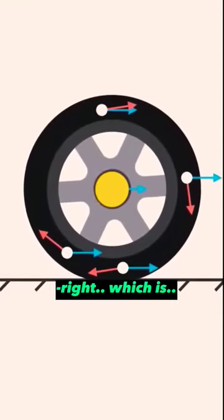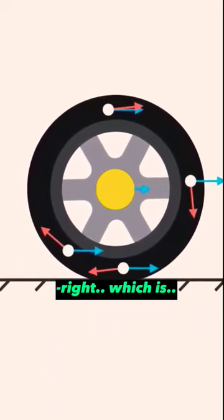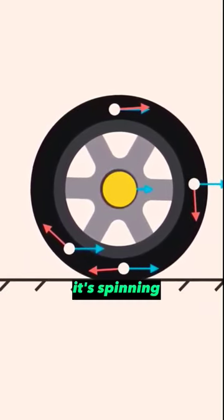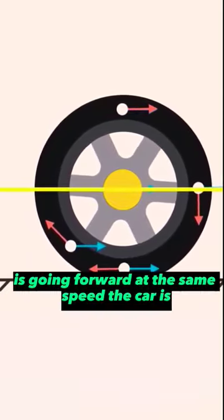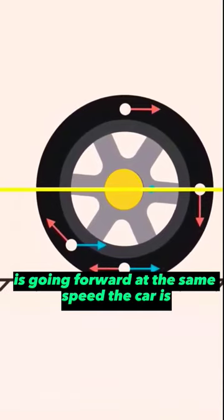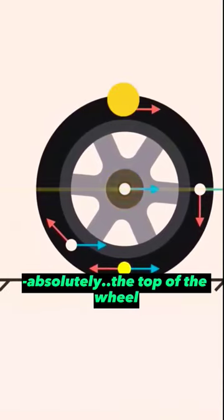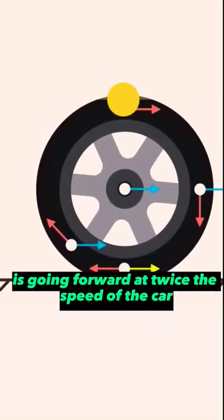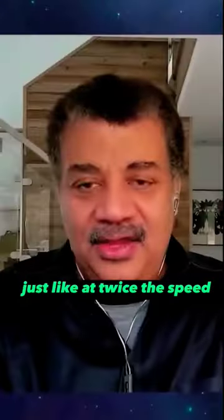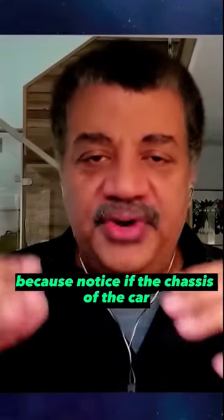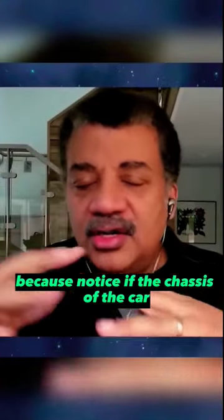Let's keep going. So the center of the wheel, which is spinning, but the exact center is going forward at the same speed the car is. Absolutely. The top of the wheel is going forward at twice the speed of the car, just like twice the speed.